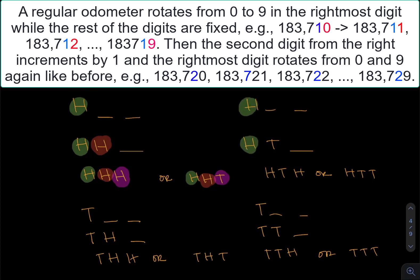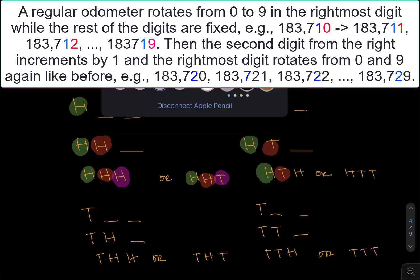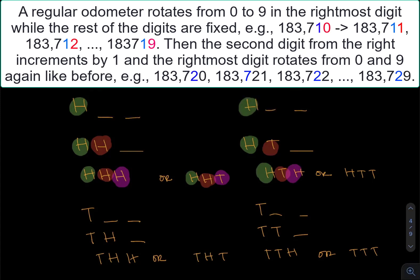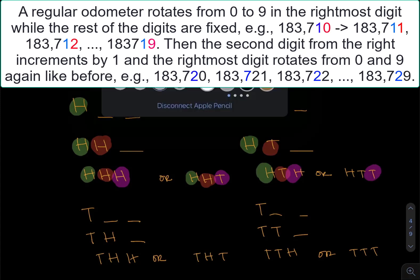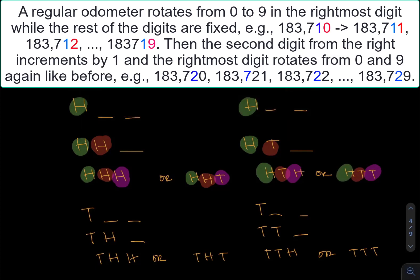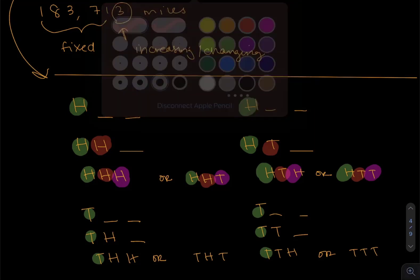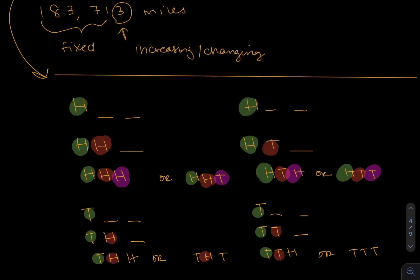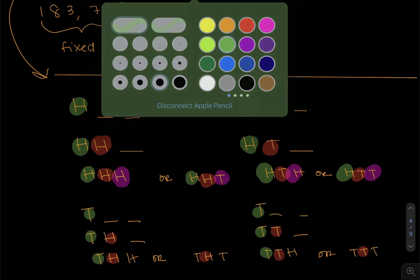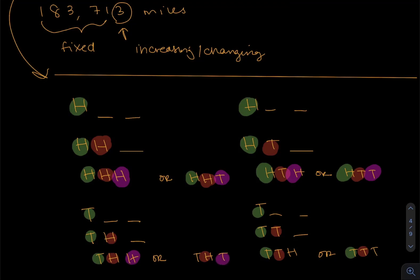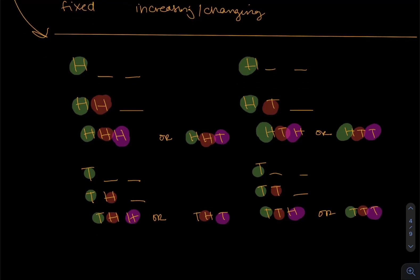Similarly, when we had heads first, we had a fixed tails second once that was decided, followed by just the rightmost value heads or tails being shifted. So once you fix a position, you move on to the rightmost value and see what you can get. And the same color coordinating idea happens with tails first. You could then get heads second or tails second. And once that last choice is made, you can get either one, heads or tails.